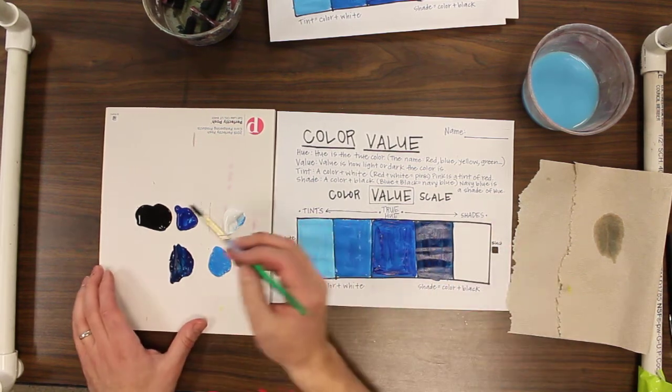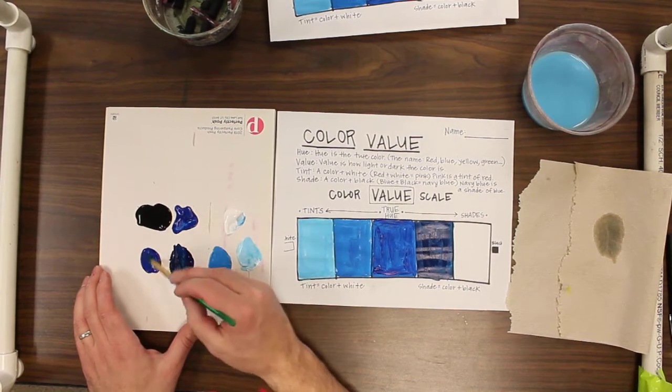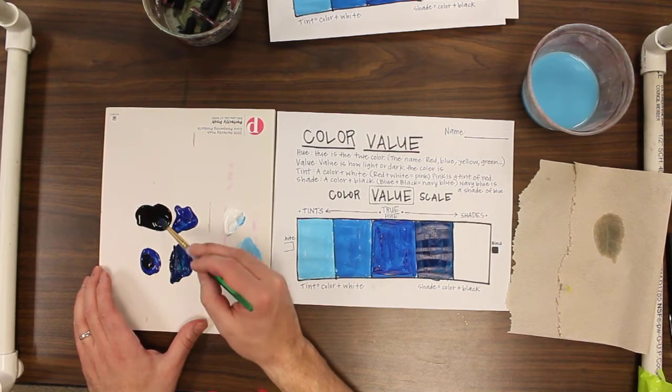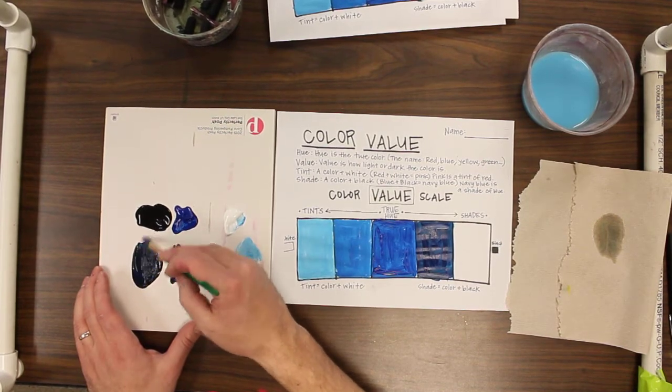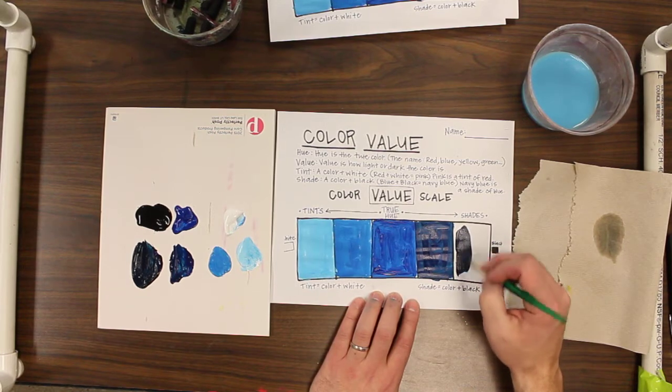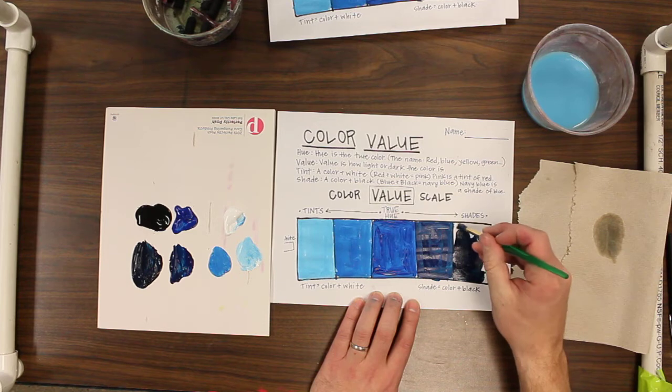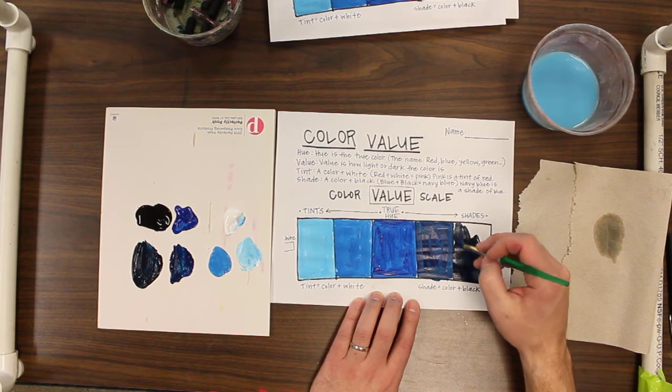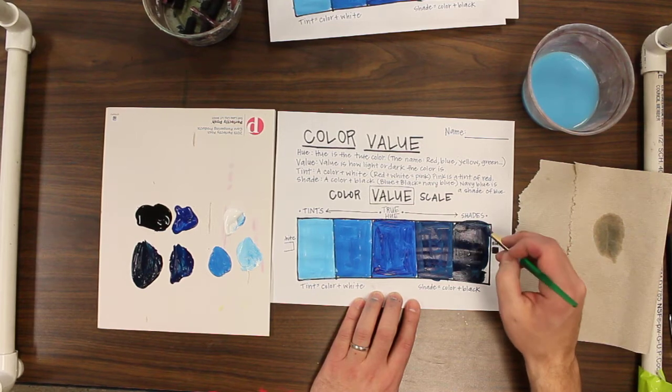And then the final one, we're going to go a little bit more blue here, and then we're going to add even more black. Probably two scoops of black, almost to the point where it is black, but you might see just a little bit of blue in there. This is going to be a value scale with one color added to it.